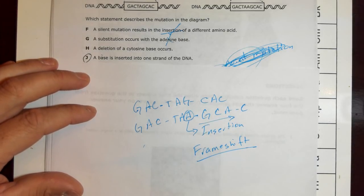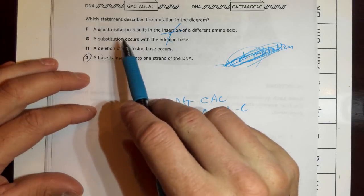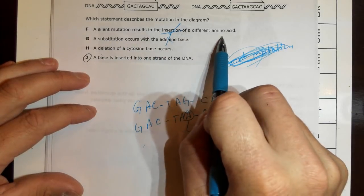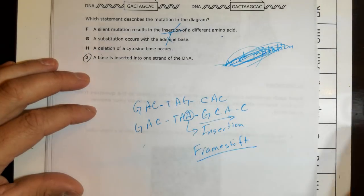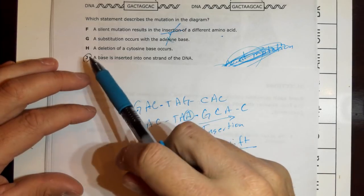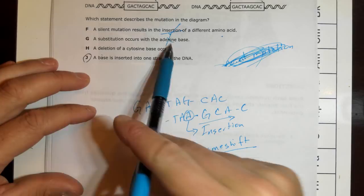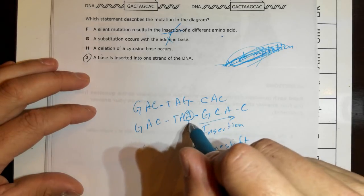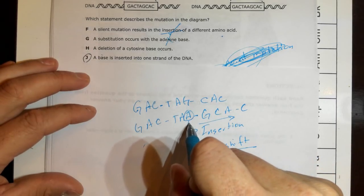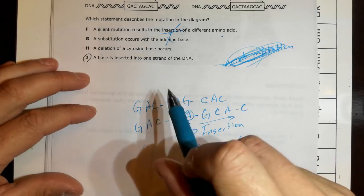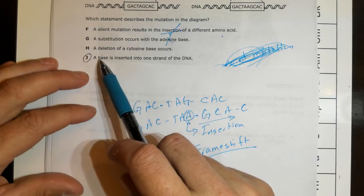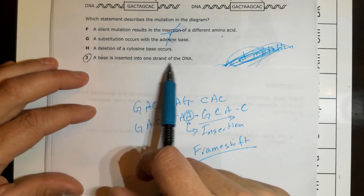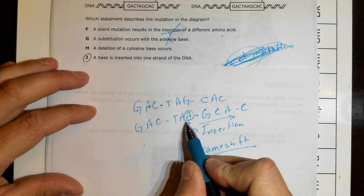So that's an insertion, and it's also what you might hear called a frame shift because it shifts the reading frame of these codons over to the right. Let's look at our answers. A silent mutation results in insertion of a different amino acid - we're not inserting amino acids, we're inserting mRNA or DNA. A substitution occurs with the adenine base - we didn't substitute, we inserted. J is the only logical answer: a base is inserted into one DNA strand.